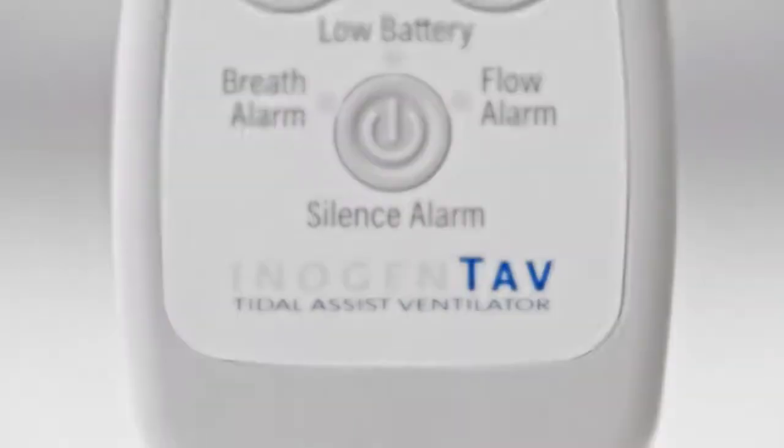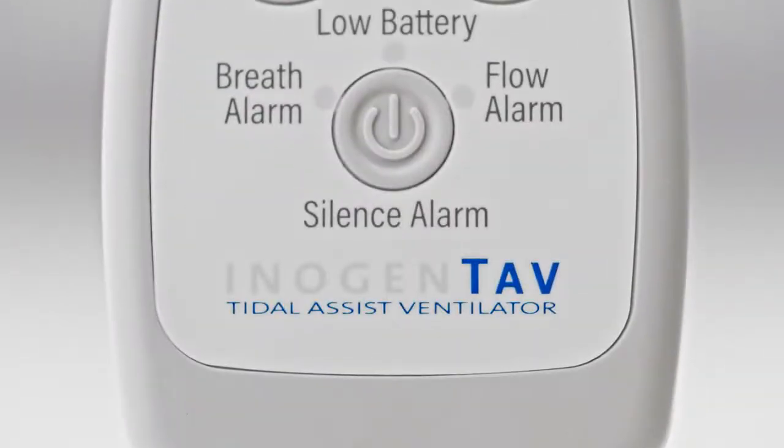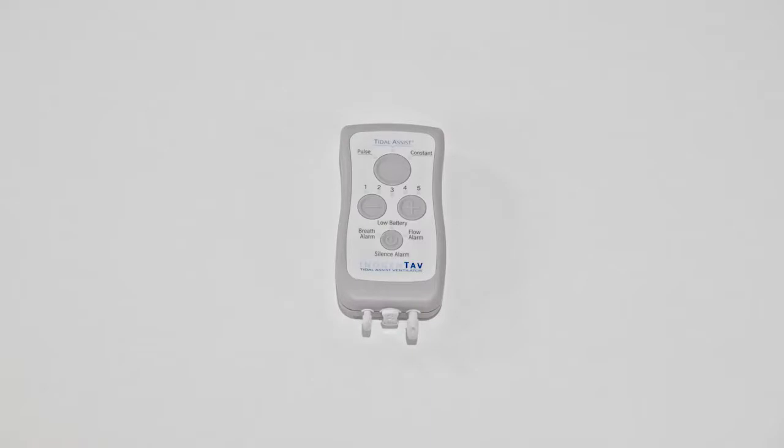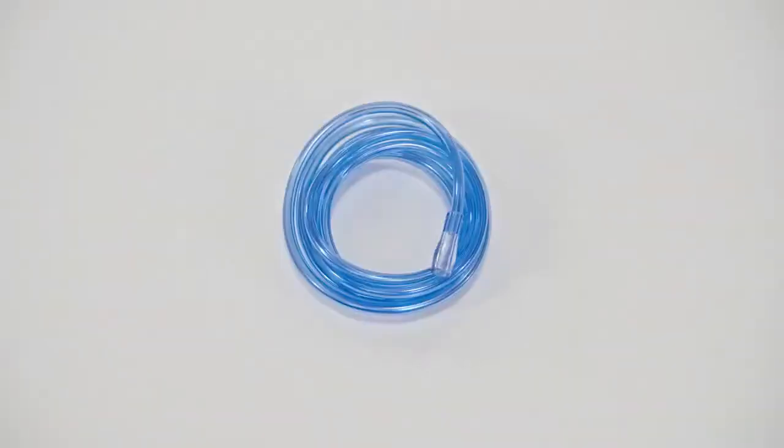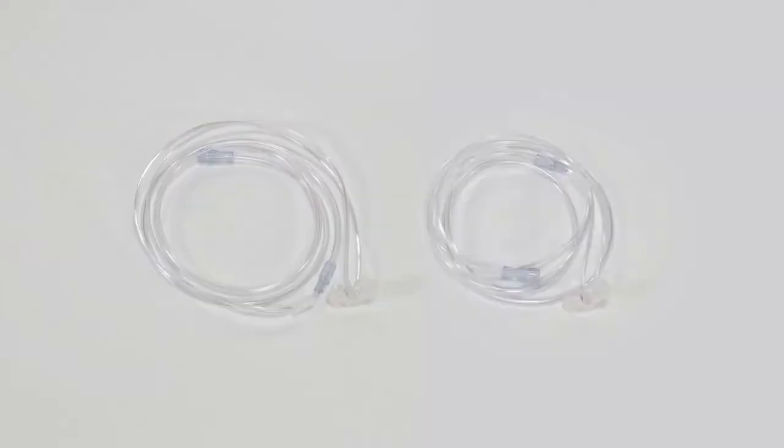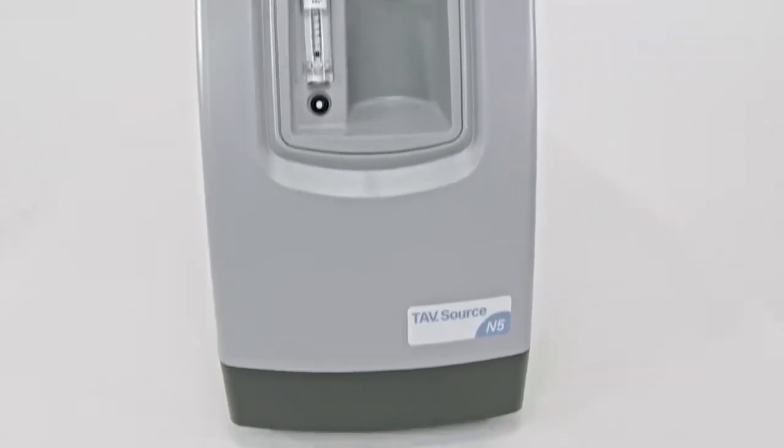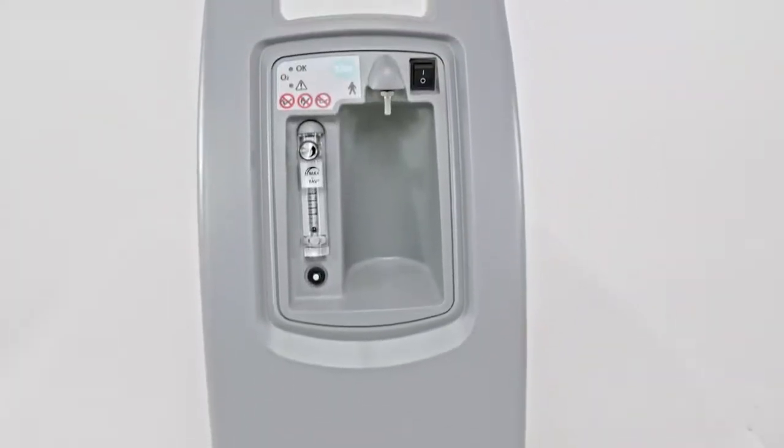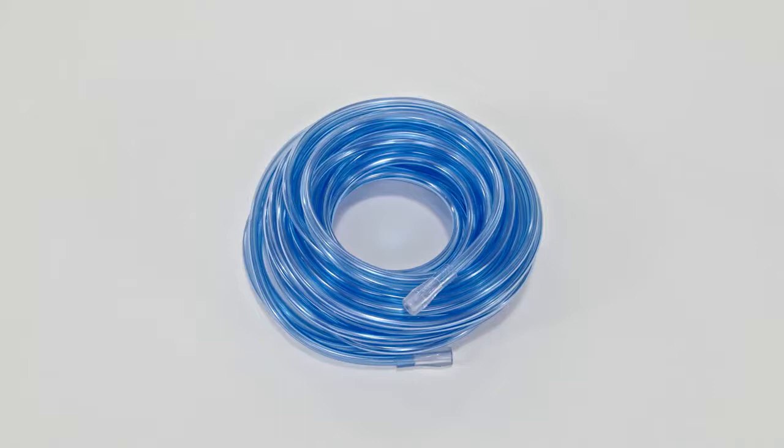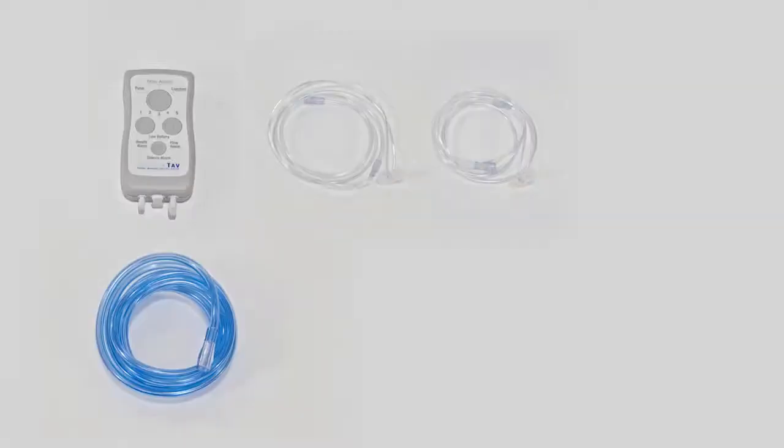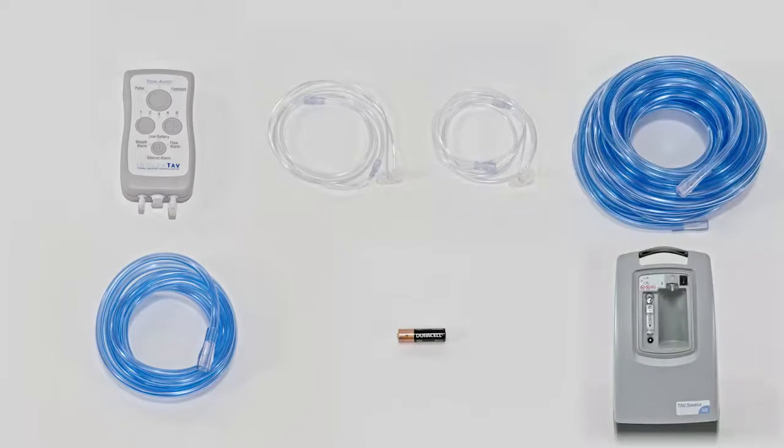Your TAV system should include a TAV controller, a 7-foot blue delivery line, two nasal pillow interfaces, one AA battery, a NIDEC Source N5 concentrator, and a longer 50-foot blue delivery line. You might want to place them in front of you for easy reference.